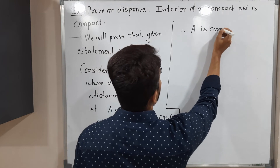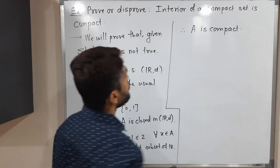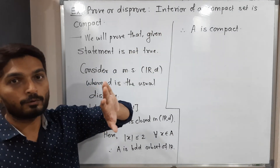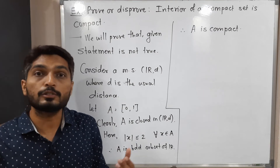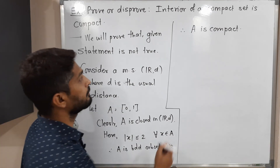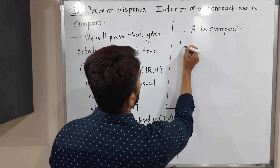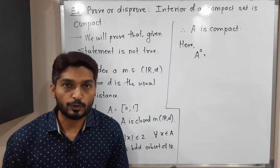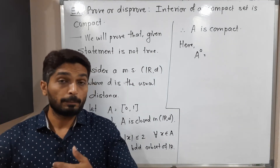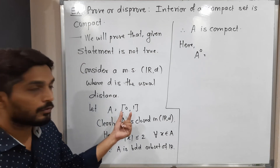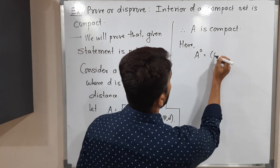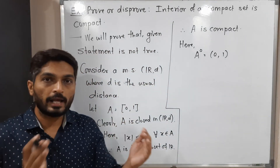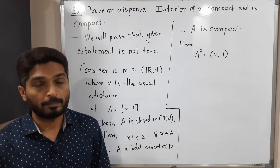We have found one compact set. Now we have to find its interior and prove that it is not compact. The interior of A — the points which lie inside — is the open interval (0, 1). It does not contain the boundary points 0 and 1, so the interior of A is the open interval (0, 1).